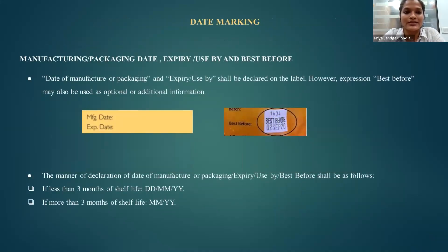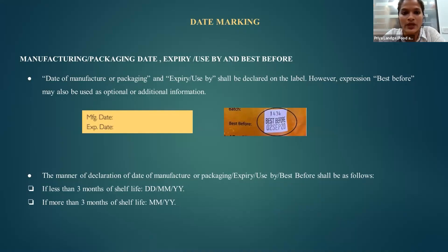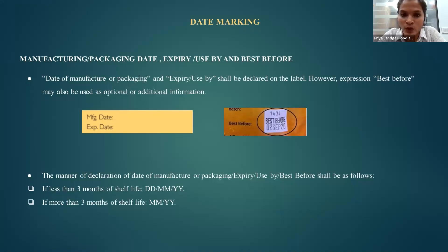Next is date marking. You can see manufacturing or packaging date, expiry or use-by date, and best before date. The date of manufacture is simply the date when you are manufacturing the product. The date of packaging is when you are manufacturing the product and placing it into a container or package. This is important so the consumer can always know when the product was manufactured and whether it is safe to consume.